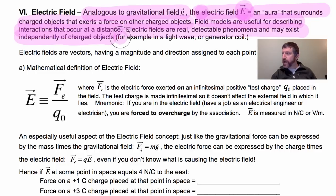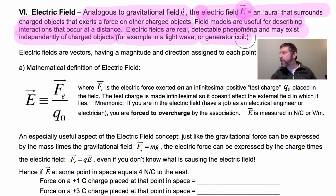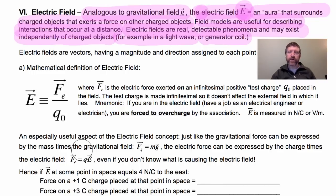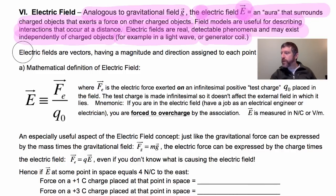In a light wave, you've got electric fields — those are alternating electric and magnetic fields. With a generator coil, you can produce electric fields without any bare charge. So electric fields are real, and they are very, very useful for us to understand stuff.